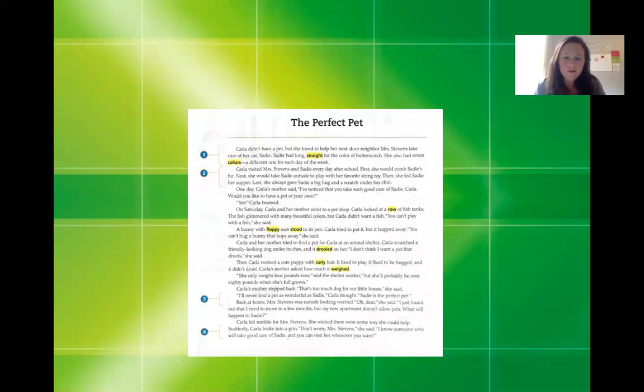Carla and her mother tried to find a pet for Carla at an animal shelter. Carla scratched a friendly looking dog under its chin and it drooled on her. I think I want a pet that drools, she says. So think about it. This pet, this friendly looking dog has spit that's kind of like dripping down the space, right?